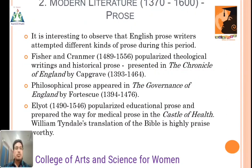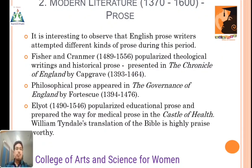Modern Literature Prose. It is interesting to observe the English prose writers attempting different kinds of prose during this period. Fischer and Krannert in 1499 and 1556 populated the theological writings and historical prose. This was presented in the Chronicle of England by Capagrave. The philosophical prose appeared in the Governance of England by Fortescue, in the year 1394 to 1476. From 1490 to 1546, educational prose prepared the way for the medieval prose in the Castle of Health. William Tyndale's translation of the Bible is highly praiseworthy.